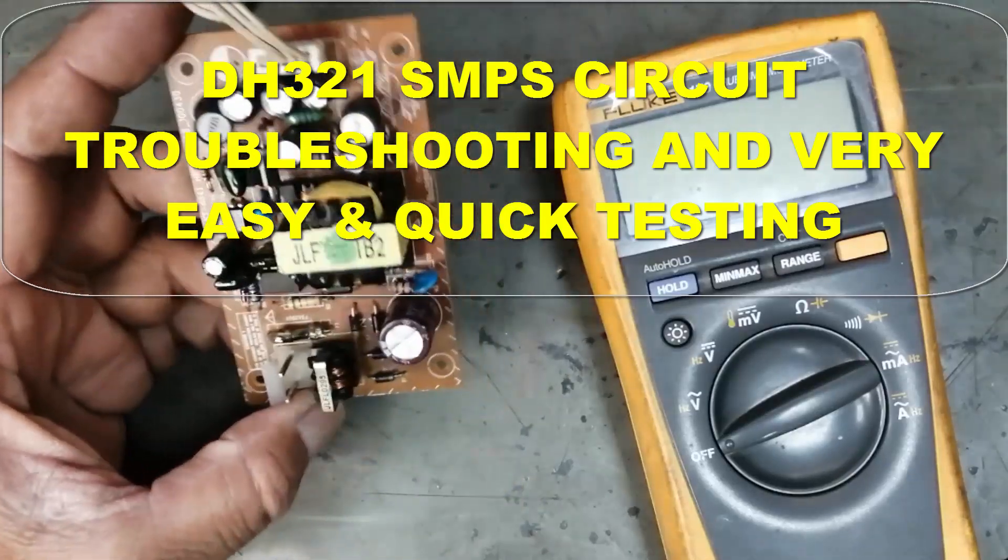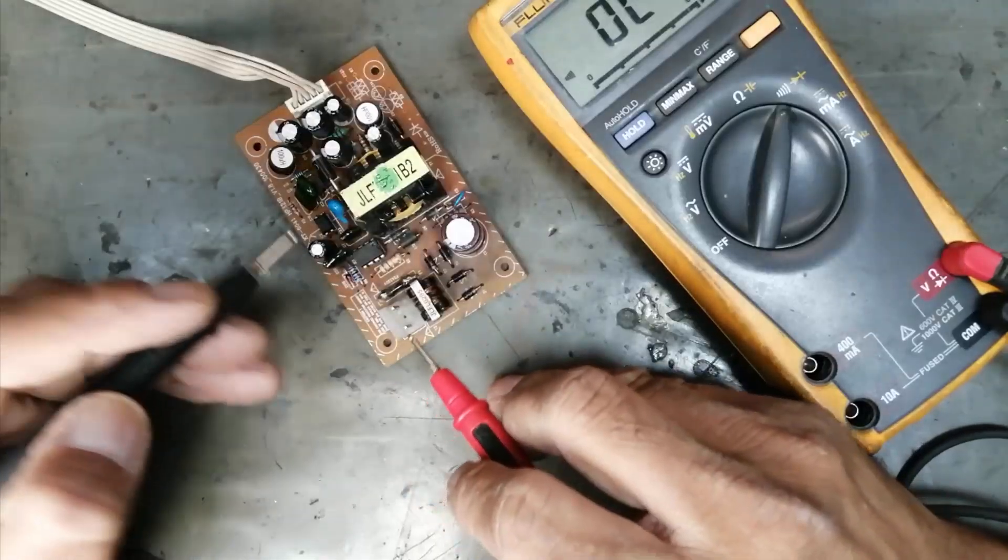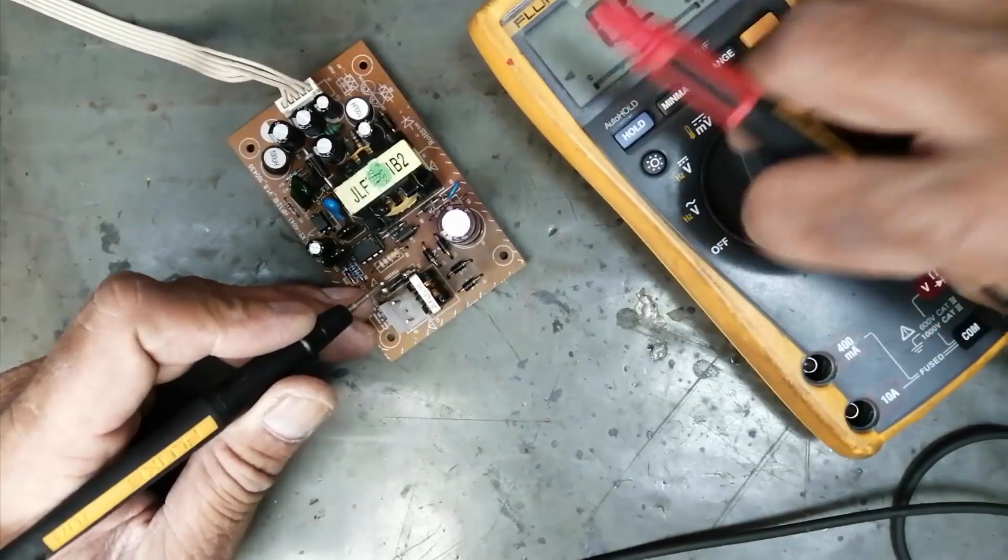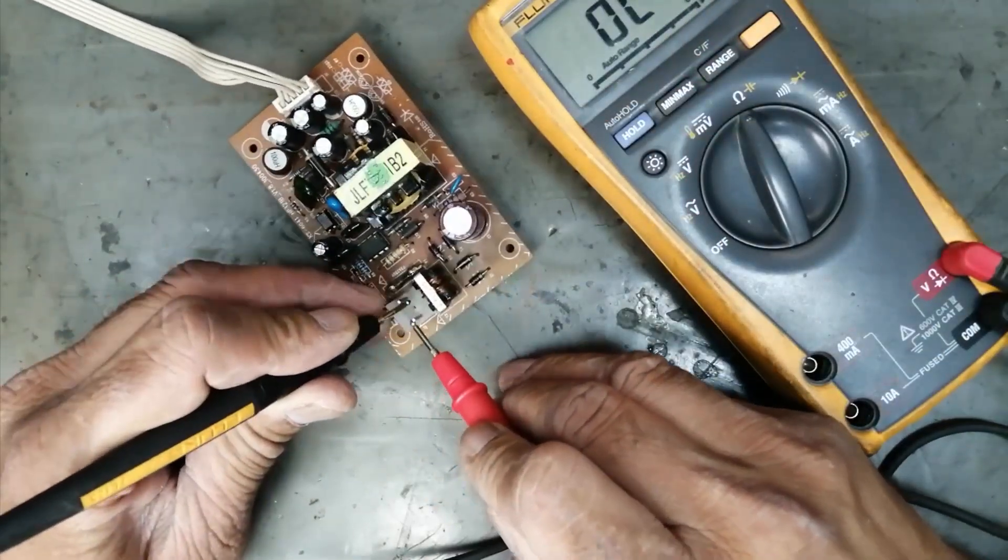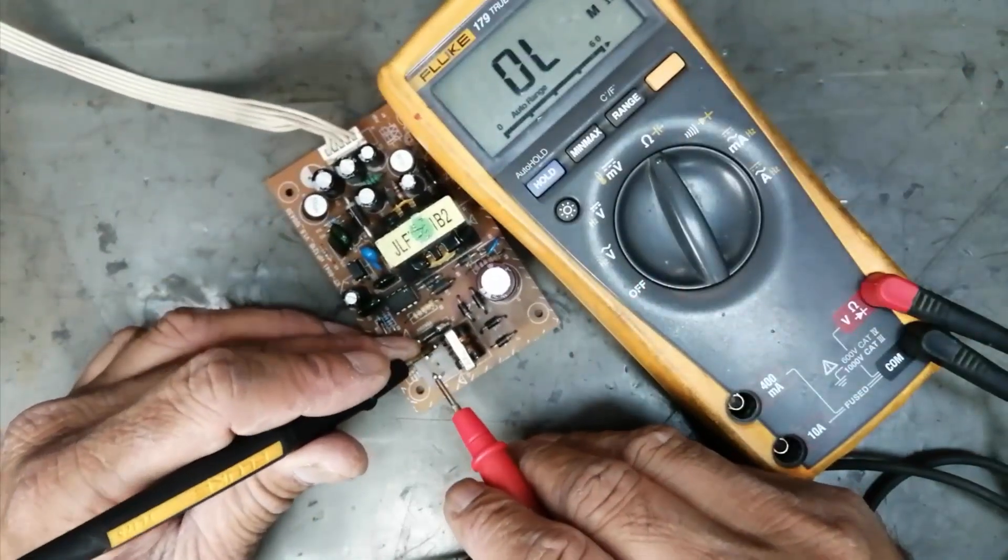today I have this power supply which is using DH321 IC. When we check any power supply, check its input terminals. The input resistance must be visible. Here I cannot find any resistor at the two terminals of the AC input terminal.